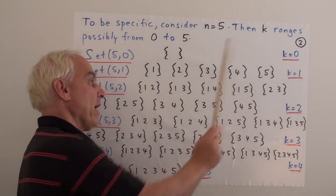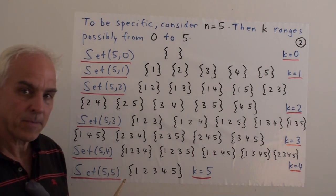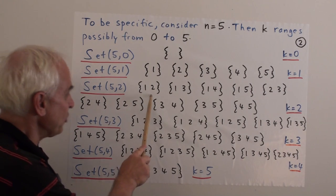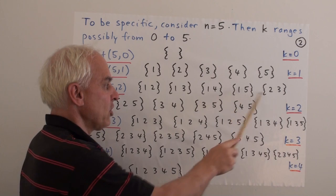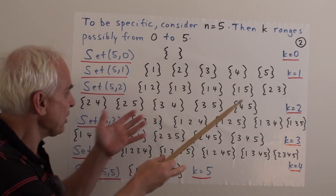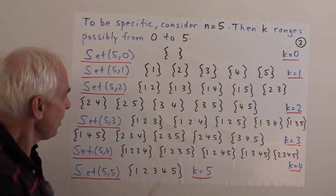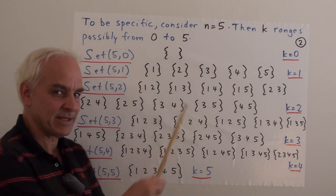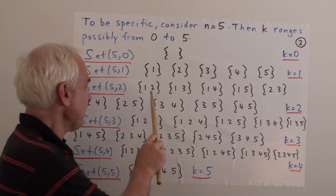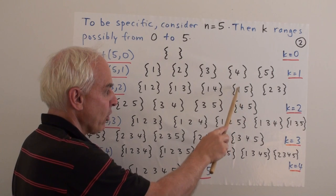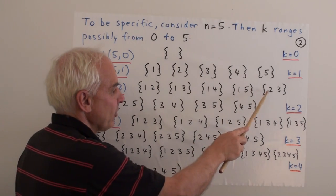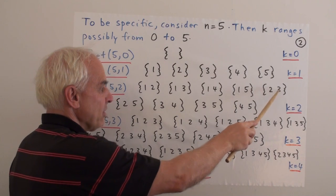When k is two, there are ten two-sets from five: {1,2}, {1,3}, {1,4}, {1,5}, {2,3}, {2,4}, {2,5}, {3,4}, {3,5}, {4,5}. We lay them out in a systematic fashion — starting with the smallest values and incrementing the last one, like an odometer on a car. Once it reaches its maximum, we roll over and go to the next value for the next leftmost entry.